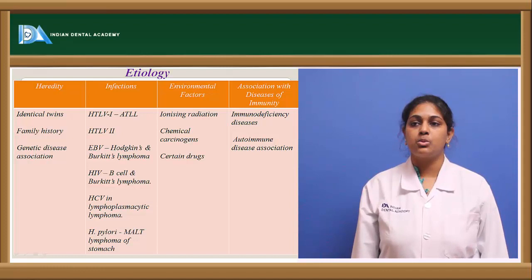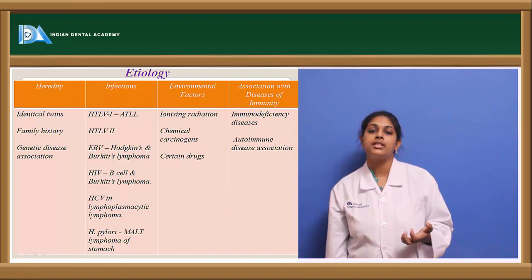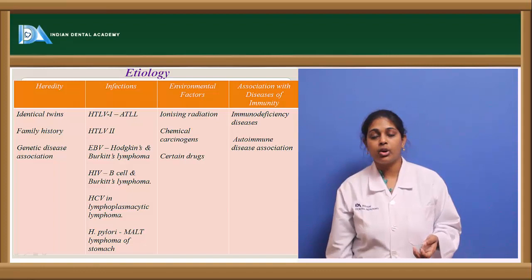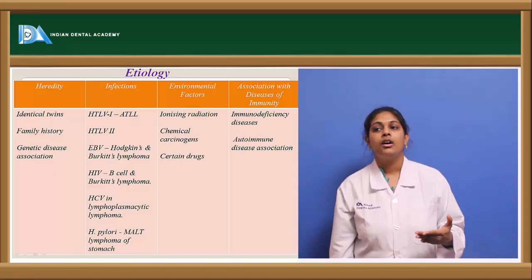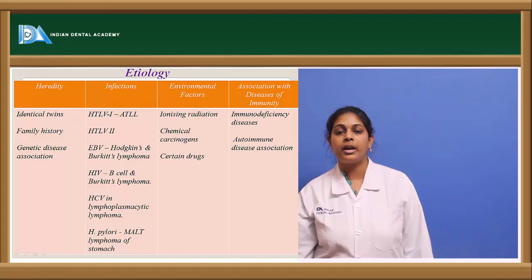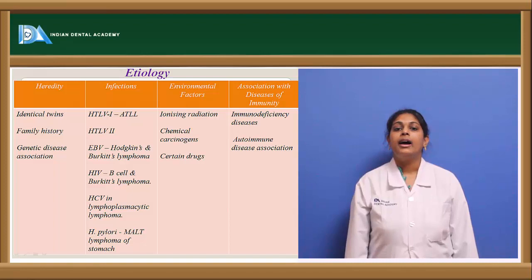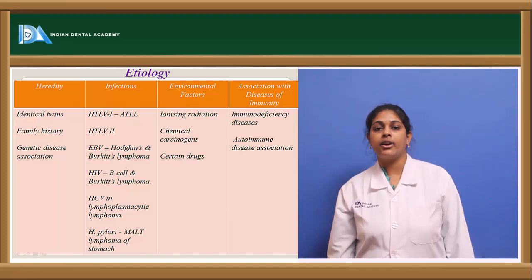There is a higher incidence rate among identical twins, indicating concordance, and leukemias appear to be familial. Genetic disease associations based on abnormalities in genetic composition have also been observed. Infectious etiological agents include the human T-lymphotropic virus — HTLV-1 is involved in adult T-lymphocytic leukemia and HTLV-2 has been implicated in developing leukemias and lymphomas. The Epstein-Barr virus is involved in causing Burkitt's lymphoma.